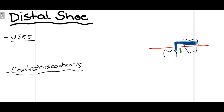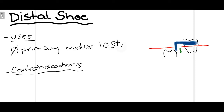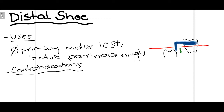Now talking about the distal shoe, which has a unique application. It is the appliance of choice when a primary second molar is lost before the eruption of the permanent first molar. That is the main indication of the distal shoe — when the second primary molar is lost before the permanent first molar erupts.